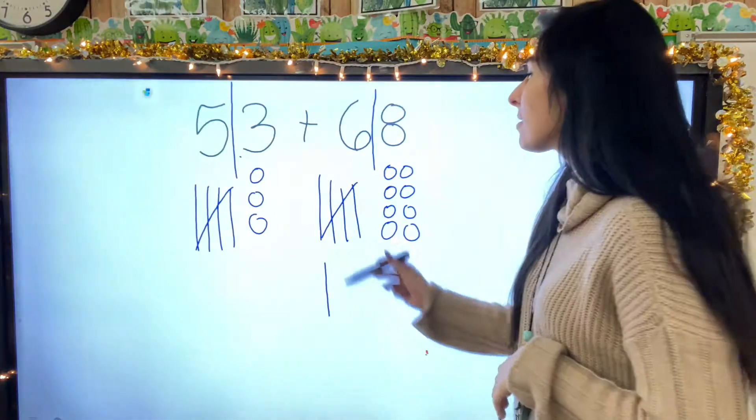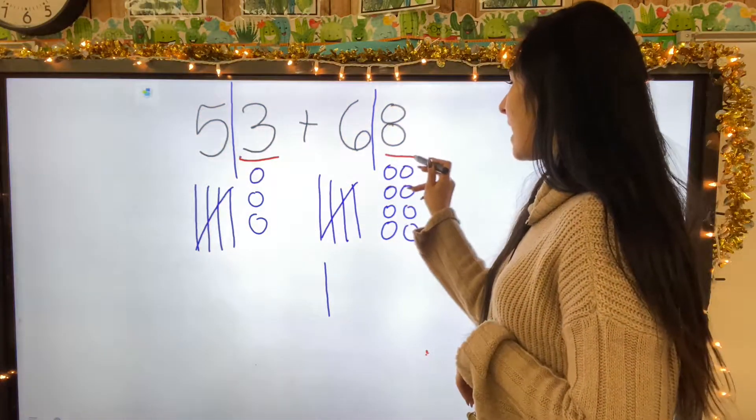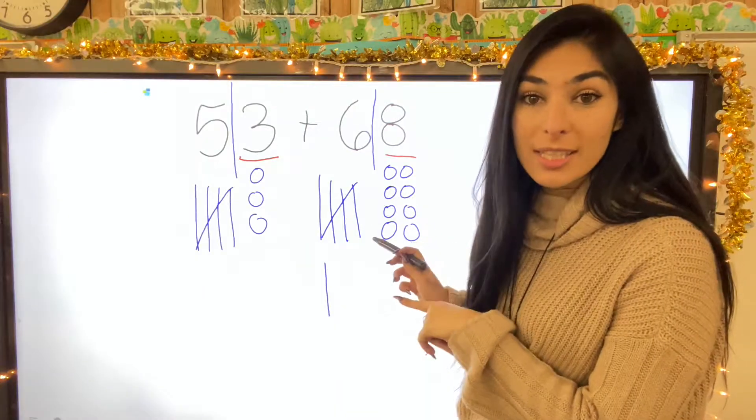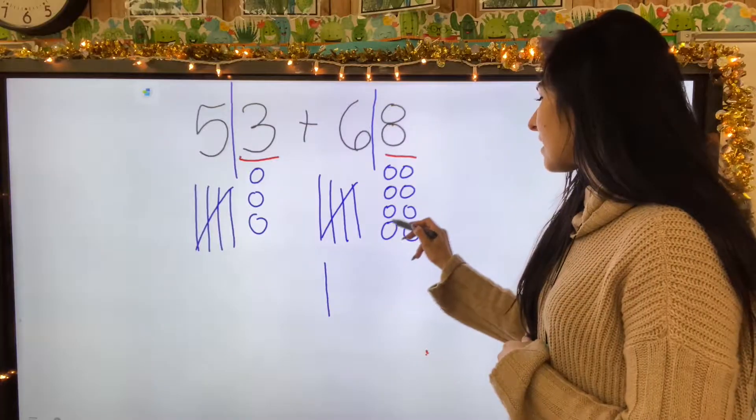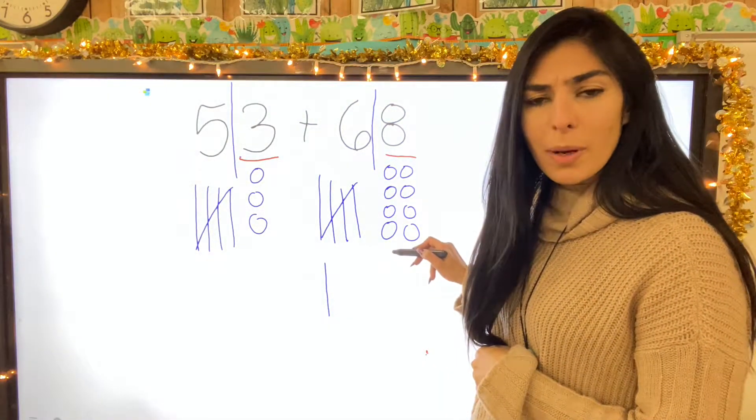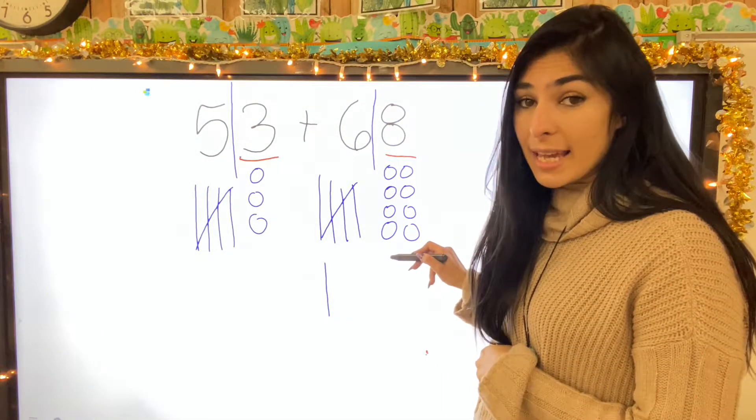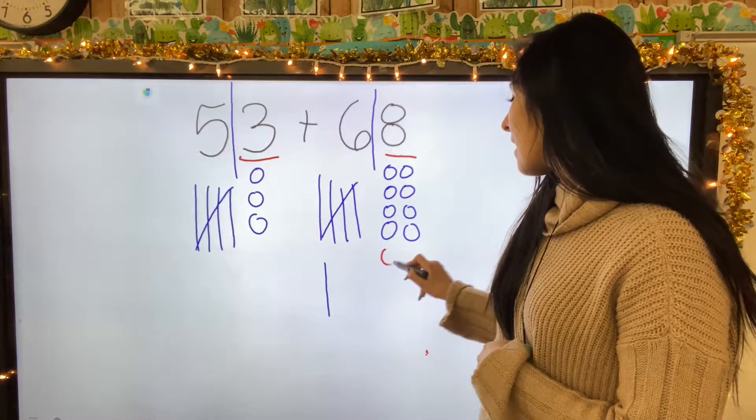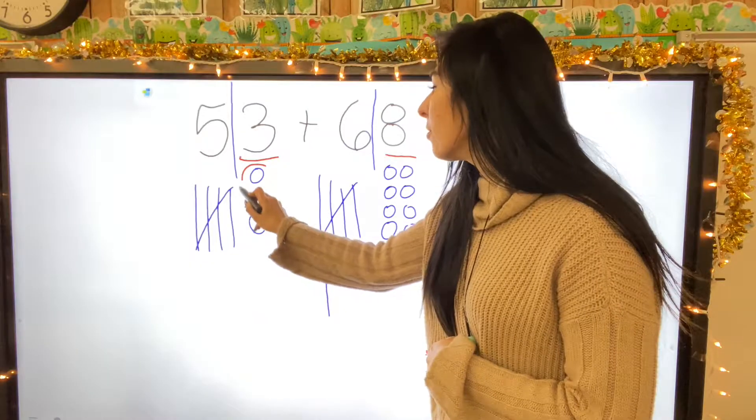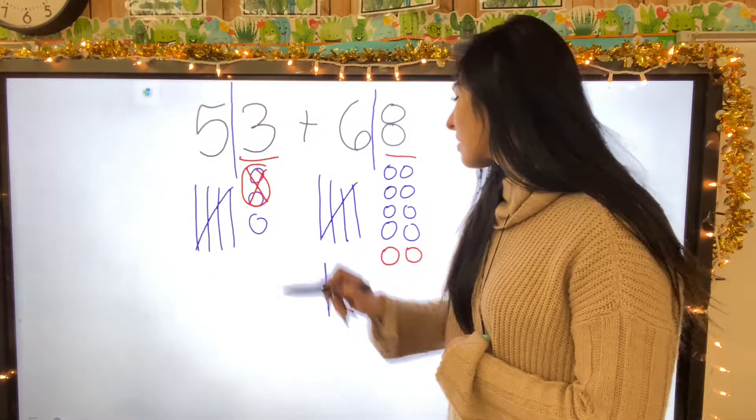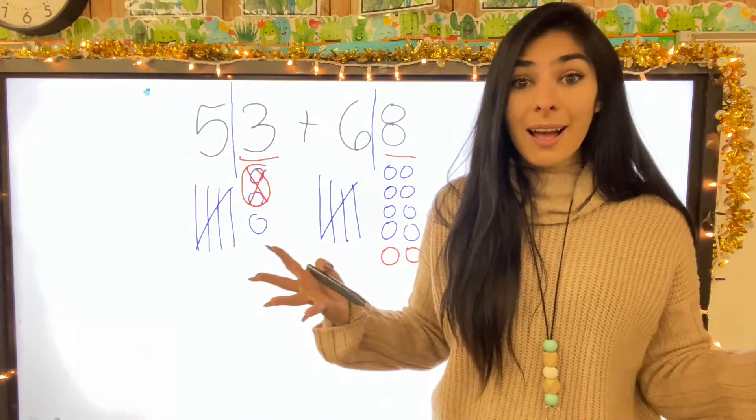So I'm going to go ahead and look at my ones. I have a three and an eight. Which one of those is closer to ten? The eight. So I'm going to go ahead: one, two, three, four, five, six, seven, eight. How many more do I need to get to ten? Eight, nine, ten. Two. So I'm going to borrow two from over here. Cross those out because now they're right here which means I unlocked our secret ten.